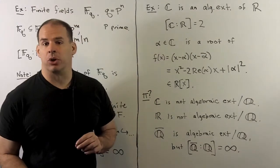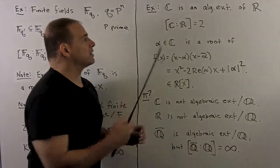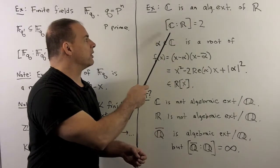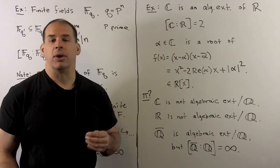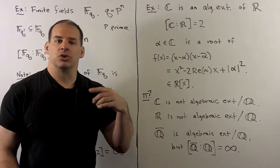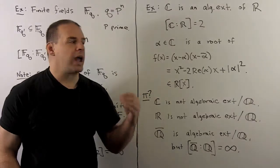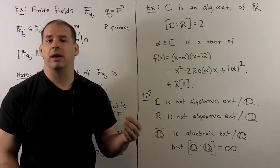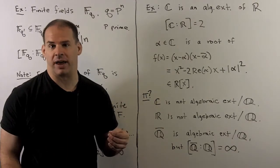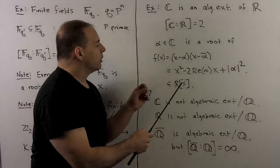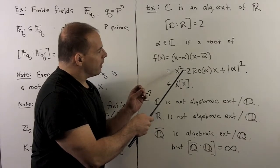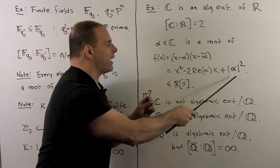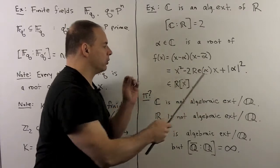Here's an example that's a little more straightforward. The complex numbers are an algebraic extension of the reals. In this case, the degree of the complexes over the reals is 2. To see directly that every element is algebraic, let's take a complex number alpha. Then this is going to be a root of the polynomial (x minus alpha)(x minus the complex conjugate of alpha). When we work that out, the coefficients are minus 2 times the real part of alpha — which is real — and the modulus squared of alpha, also real. So this is a polynomial over the reals.